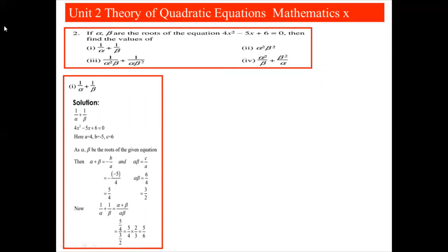For part 1, given equation is 4x² - 5x + 6 = 0, so a = 4, b = -5, c = 6. Since alpha and beta are the roots, sum of roots = -b/a = -(-5)/4 = 5/4, and product of roots = c/a = 6/4 = 3/2.